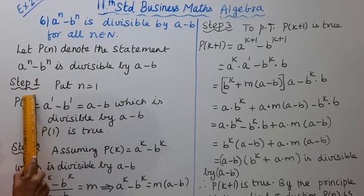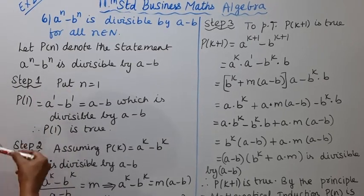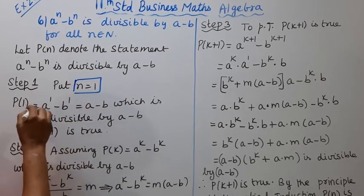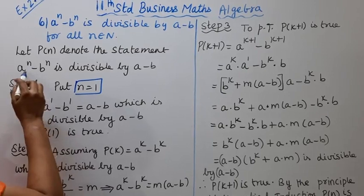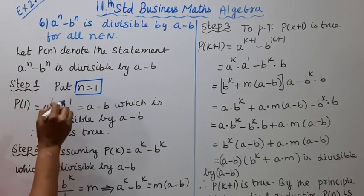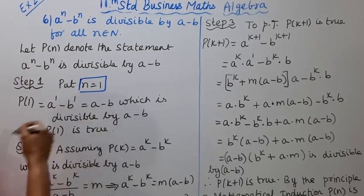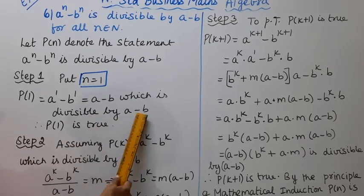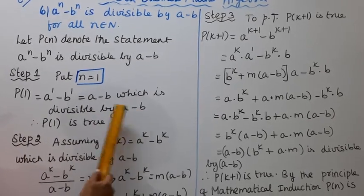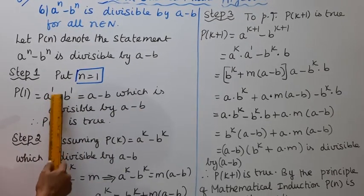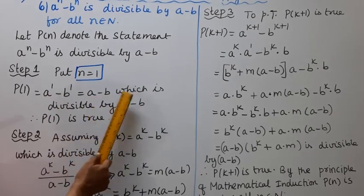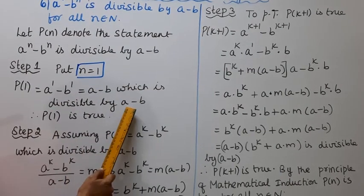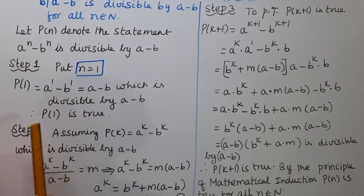Step 1: Let n equal to 1. P of 1 equals a power 1 minus b power 1, which equals a minus b, which is divisible by a minus b. Therefore P of 1 is true.